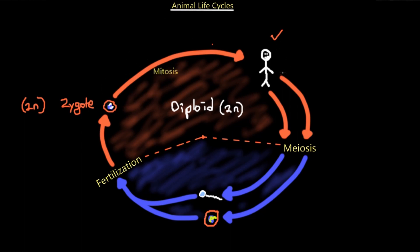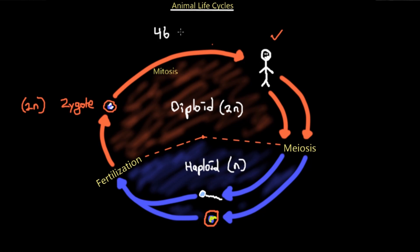We undergo lots of mitosis in order to produce our fully sized human. The germ cells of a fully grown mature animal will undergo meiosis. Somatic cells, which are regular body cells, will continue to undergo mitosis and will not produce gametes. However, germ cells — sex cells — will undergo meiosis, which produces cells that enter the haploid phase. In humans, we have 46 chromosomes, or 23 pairs.